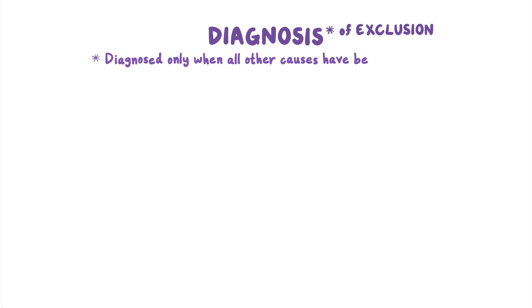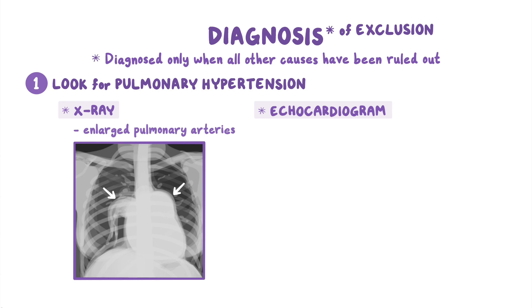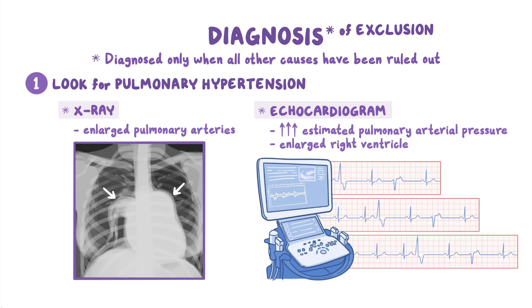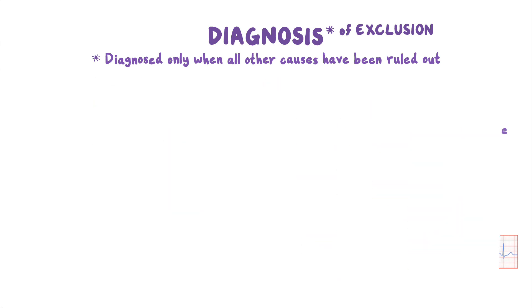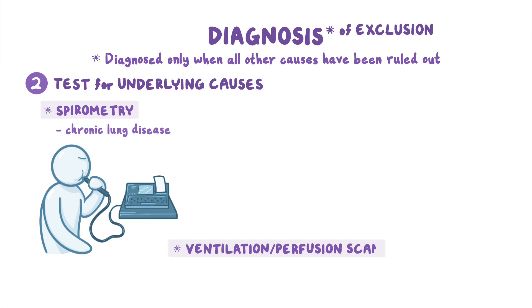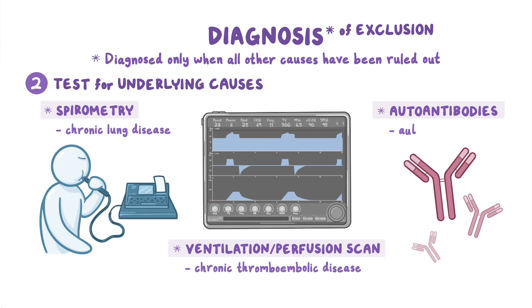PAH is a diagnosis of exclusion, which means that it's diagnosed only when all other causes of pulmonary hypertension have been ruled out. The first step is to look for pulmonary hypertension through a chest x-ray, which shows enlarged pulmonary arteries, or an echocardiogram, which typically reveals increased estimated pulmonary arterial pressure and enlarged right ventricle. Tests are usually done to look for underlying causes like spirometry to look for chronic lung disease, ventilation perfusion scan to rule out chronic thromboembolic disease, and testing for autoantibodies to exclude autoimmune diseases.